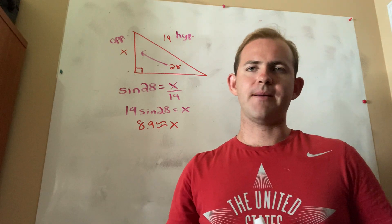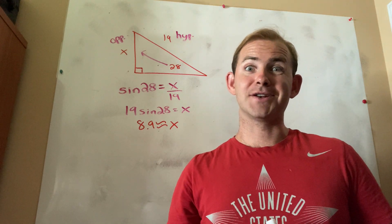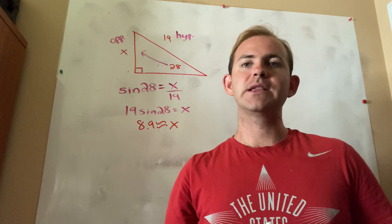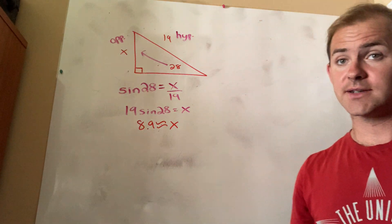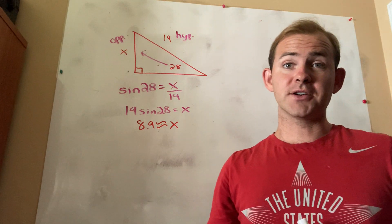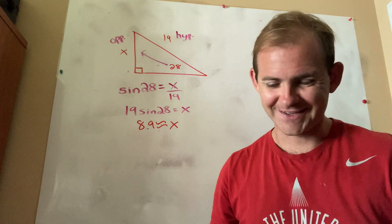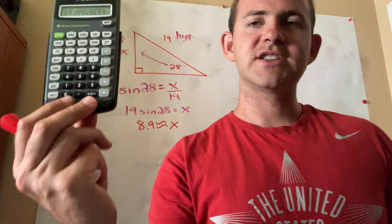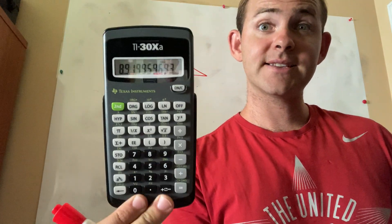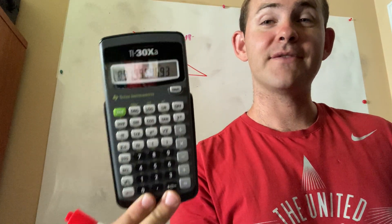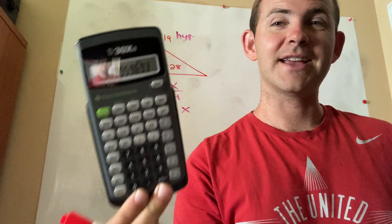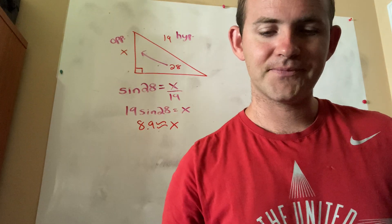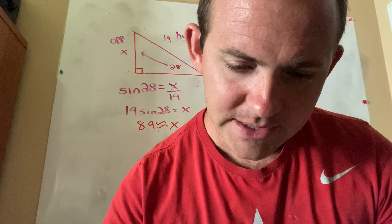So let's see what we learned from this problem. First of all, we learned that it's not that hard. Second of all, we learned that labeling is very important. And third, we learned that we need to know how to round. In this particular case, we rounded down. We just kept it at 8.9 because the next number was less than 5. If it's 5 or greater, round up. If it's less than 5, round down.